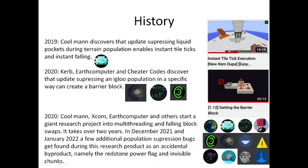Kuhlman discovered that you can turn on instant tile ticks by update suppressing a liquid pocket during terrain population. When a liquid pocket is placed, it first turns on instant tile ticks and after it finishes being placed, it turns them off. He found that if you update suppress it, you can turn on instant tile ticks, and that's extremely powerful.